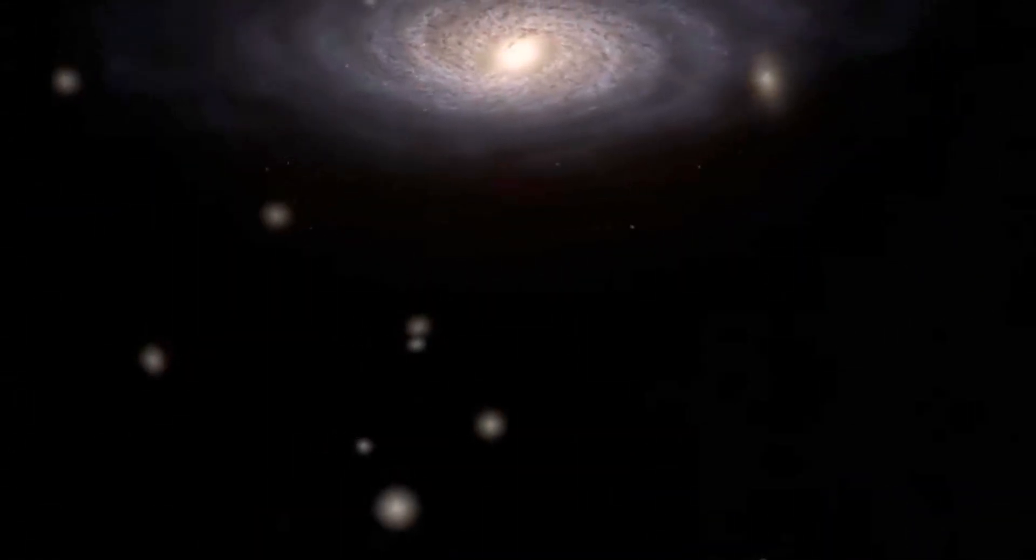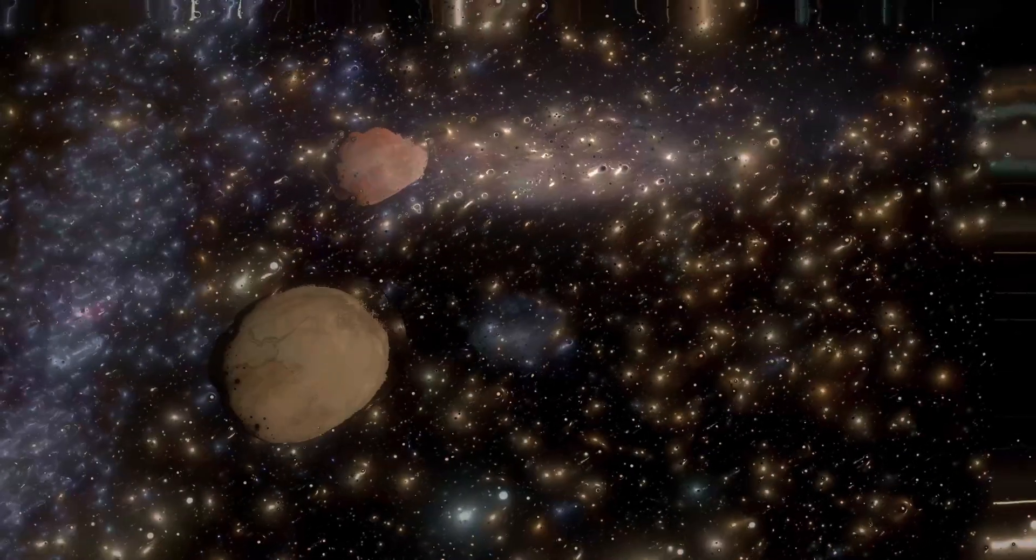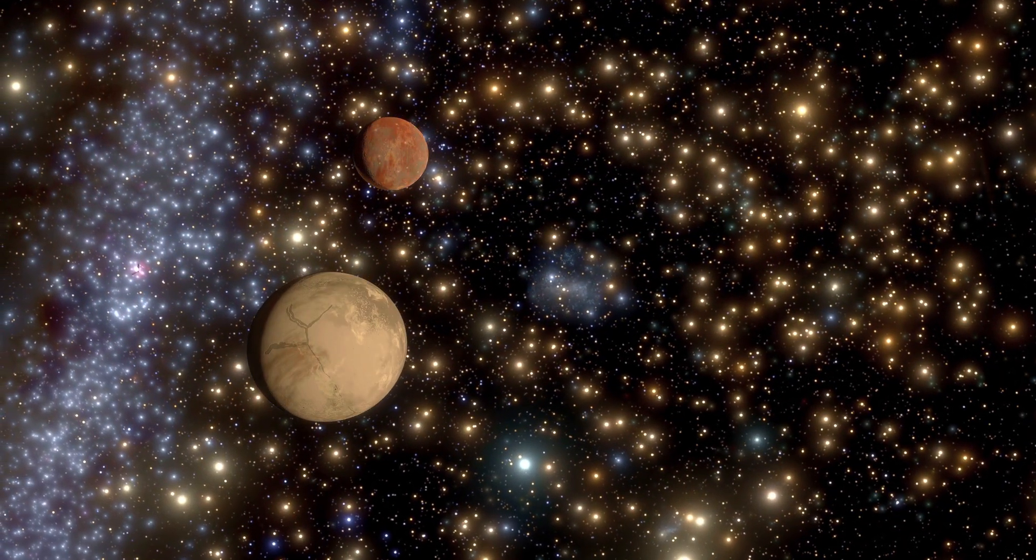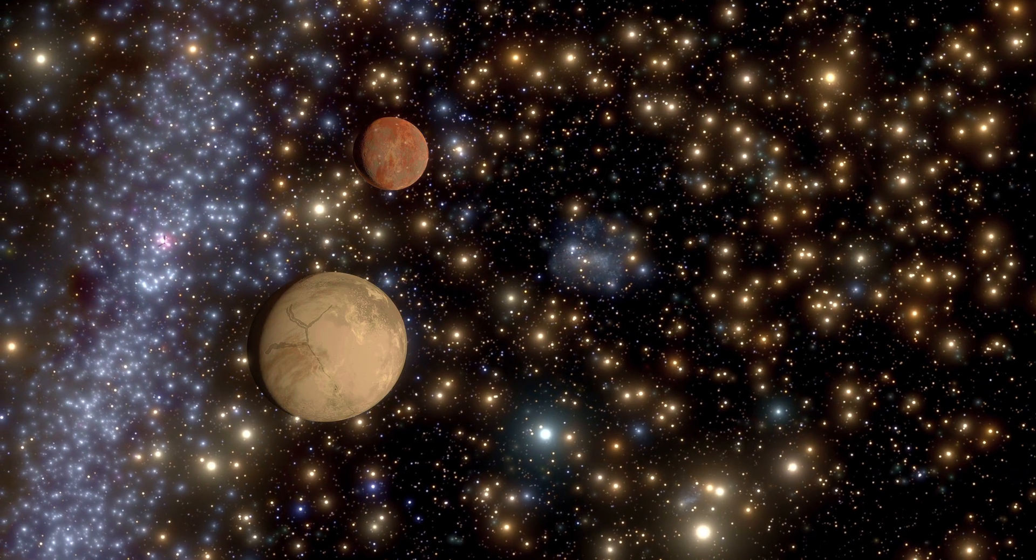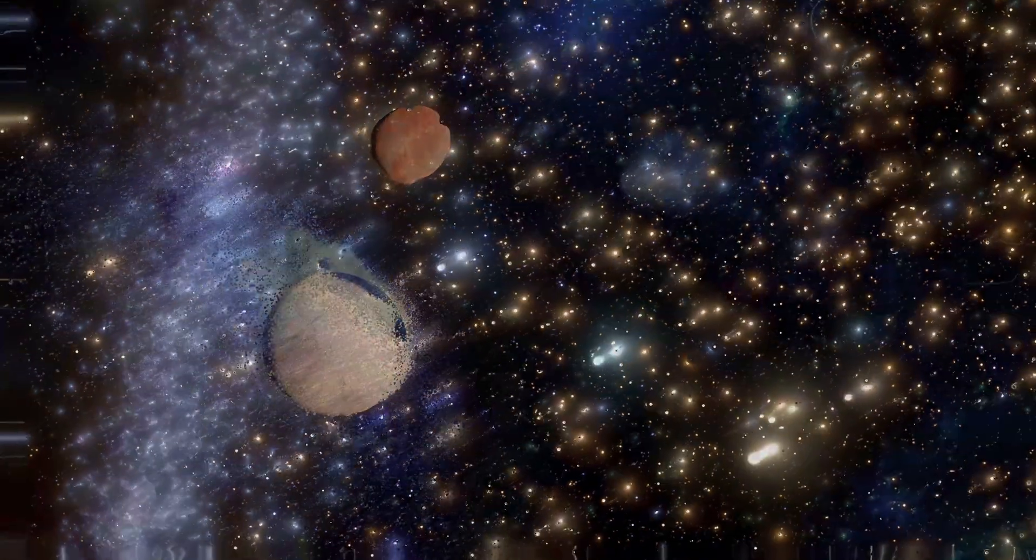It's not flat. It's bending, twisting, moving. Even the outer halo, once thought to be just a haze of old stars, is full of structure. Stellar streams, clusters, and remnants of galaxies we once absorbed.